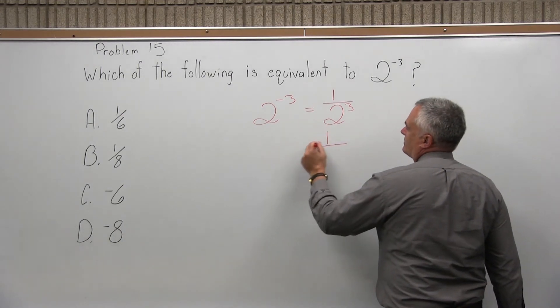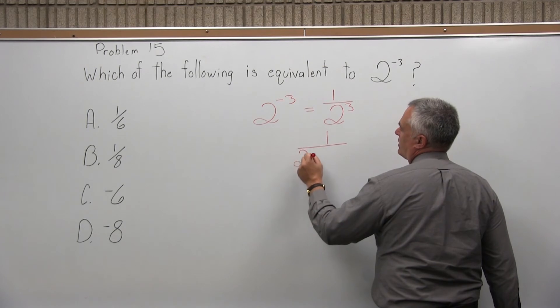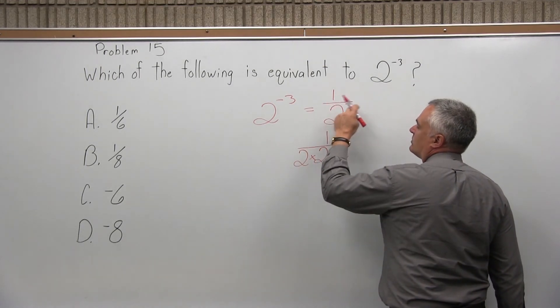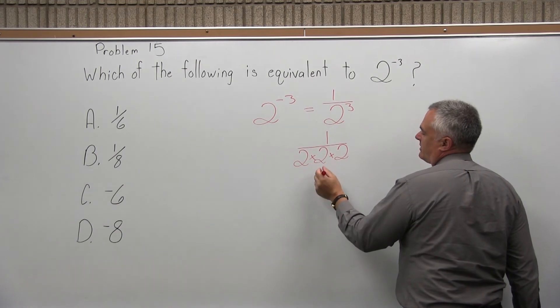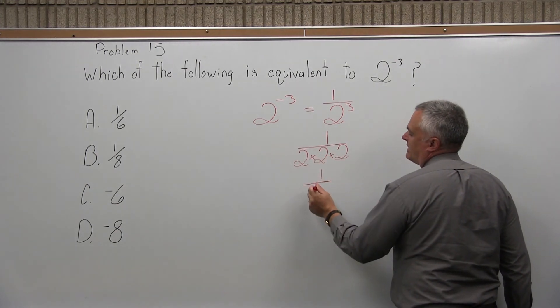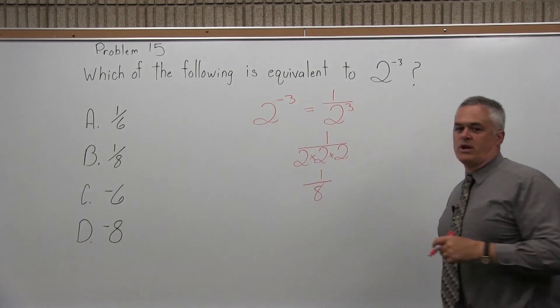Now that we know that, you have 1 over 2 to the third is 1 over 2 times 2 times 2. 2 to the third means 3 2's multiplied together. So 2 times 2 is 4, 4 times 2 is 8. So we have an answer of 1 over 8 or 1 eighth.